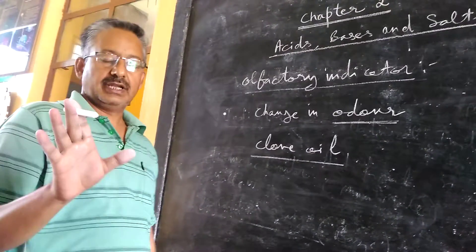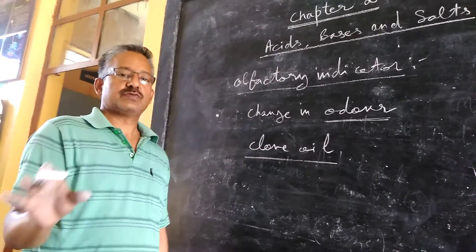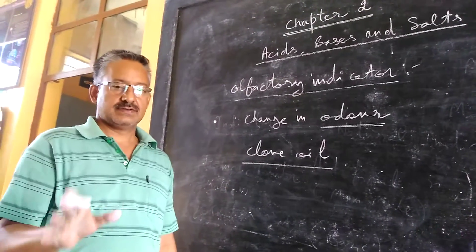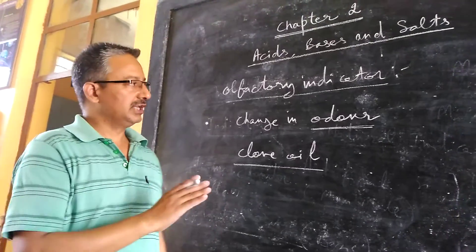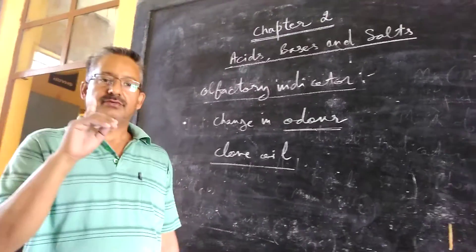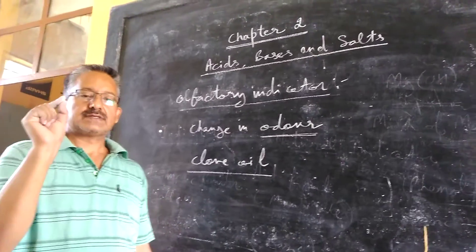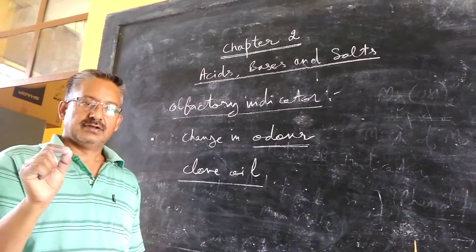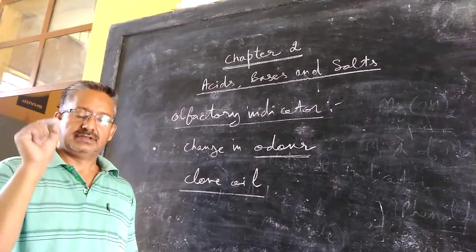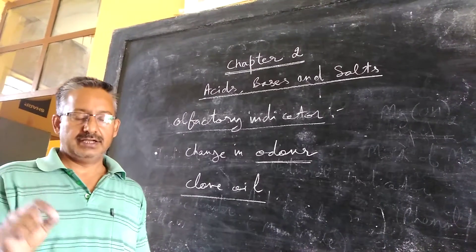So the third thing which we have learnt is olfactory indicators. So for the beginning of this chapter, let us today do only this much. So what have we learnt today? We have learnt first thing: what is antacid. Second thing: example of antacid. Third thing: what is an indicator.